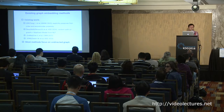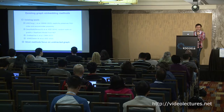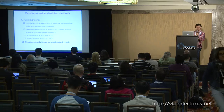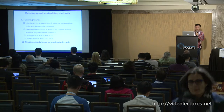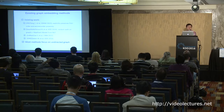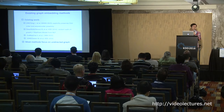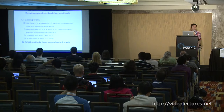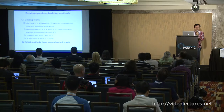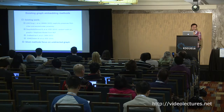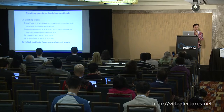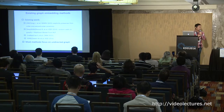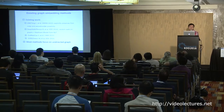Graph embedding has aroused much research attention recently, so before we move on let's review some existing graph embedding methods. LINE, published at WWW 2015, explicitly preserves first-order and second-order proximity between nodes. DeepWalk, published at KDD 2014, uses random walk on graphs and borrows the skip-gram model from NLP to do graph embedding. One thing these methods have in common is that most focus on undirected graphs.